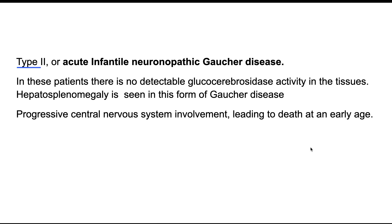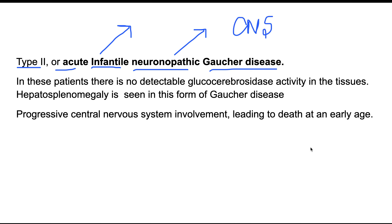Type 2 is the more serious form — acute infantile neuropathic Gaucher's disease. As the name suggests, it affects infants and leads to death at a very early age. It is acute and neuronopathic, meaning there is CNS involvement. There is no detectable glucocerebrosidase activity in the tissues. Hepatosplenomegaly and skeletal disorders are present, along with progressive CNS involvement, leading to early death.